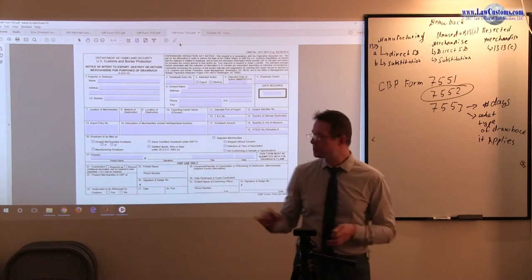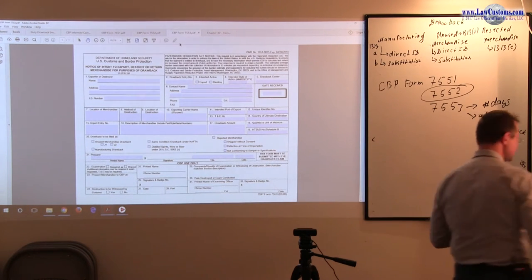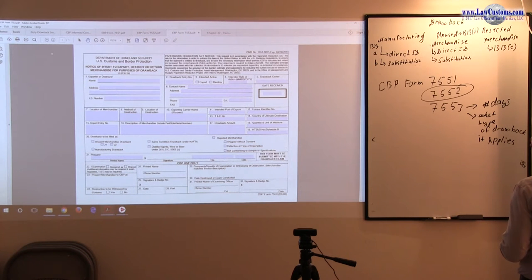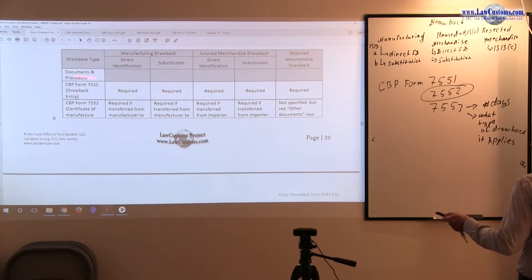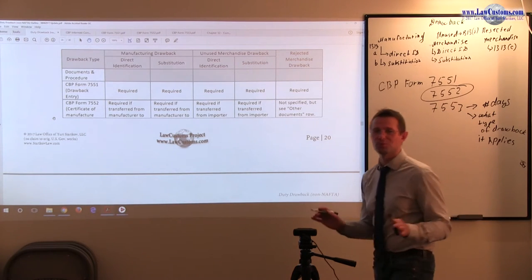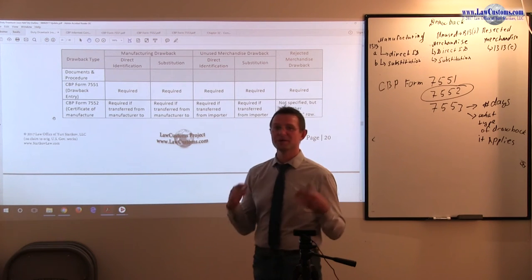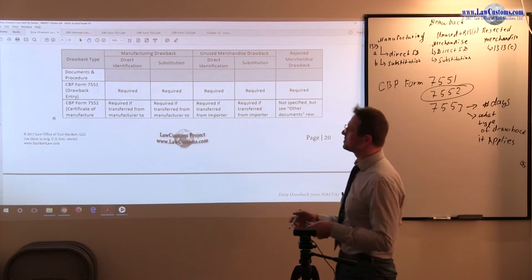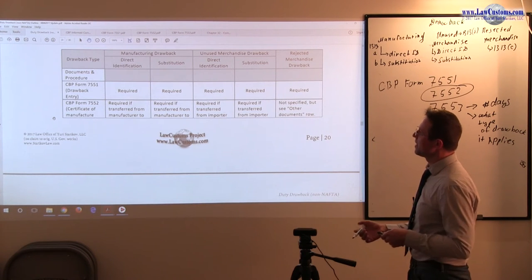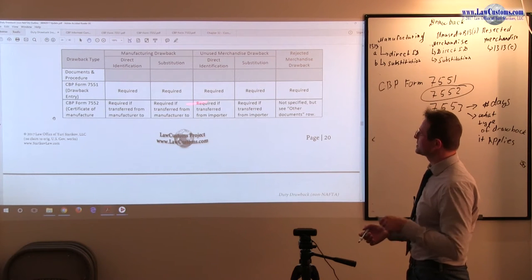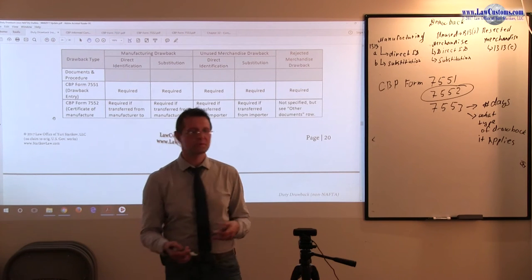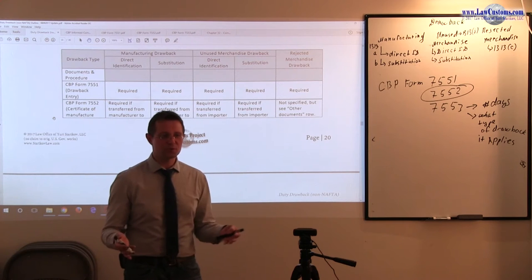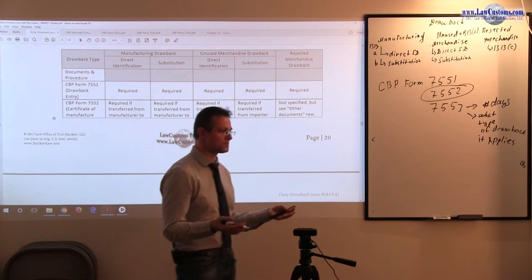Going back to the table itself, we know that we have this breakdown. And to file a drawback, this is a must. This is like 7501 for the entry, CBP form 7551 is for the drawback. It takes all relevant information and it starts the process going. This form, Chain of Custody, as I mentioned, currently under old rules, if there is a problem, there is a transfer. Every time there is a transfer it is required, because if there is no transfer the chain of custody is clear.